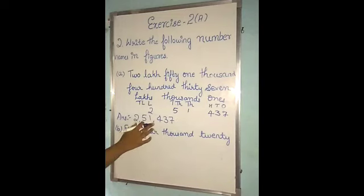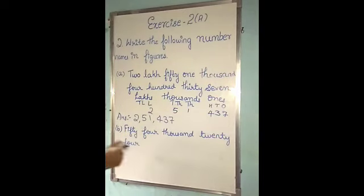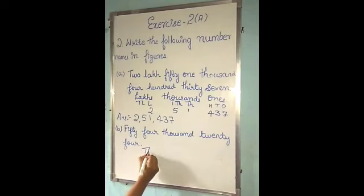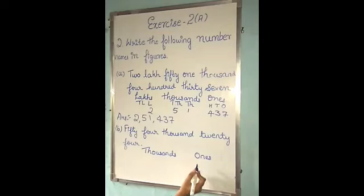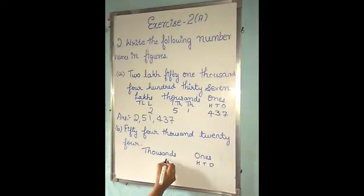So the answer is 2,051,437. We use a comma to separate the periods. Now the second one: 54,024. Here the number name started with the thousands period. So I will write here: thousands, then ones. The ones period is divided into 3 places: ones, tens, and hundreds. The thousands period is divided into 2 places: thousands and ten-thousands.